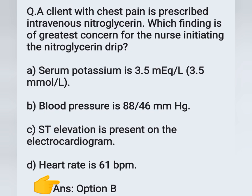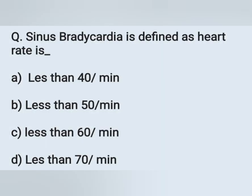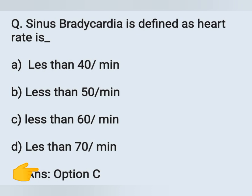Next question: sinus bradycardia is defined as a heart rate of: A) less than 40 per minute, B) less than 50 per minute, C) less than 60 per minute, D) less than 70 per minute. Bradycardia means decreased heart rate. Sinus bradycardia means the heart rate is less than 60 beats per minute. Option C is correct.